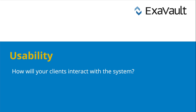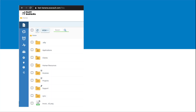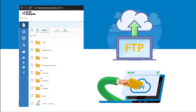Usability: how will your clients interact with the system? If your clients are looking for a simple way to circulate data, make sure the software has a web interface and is user-friendly. More advanced requirements may include manually connecting through FTP and SFTP, or having access to developer integrations such as APIs. Be sure to confirm the software will make accessing data easy and efficient.